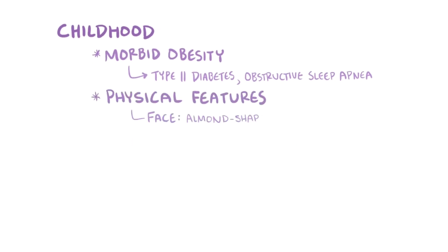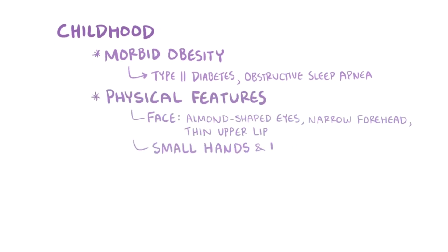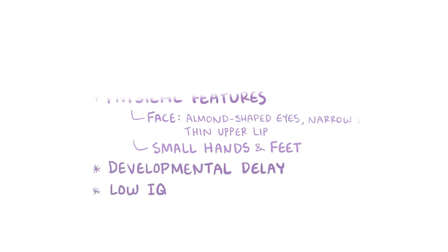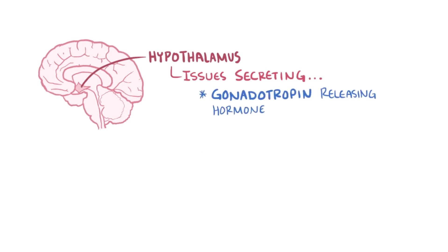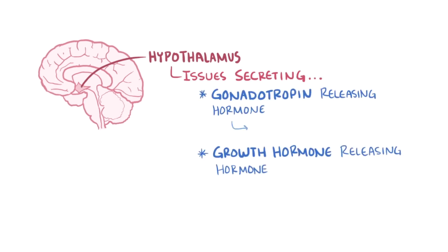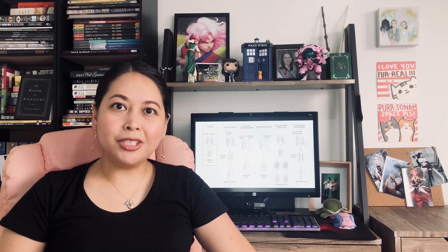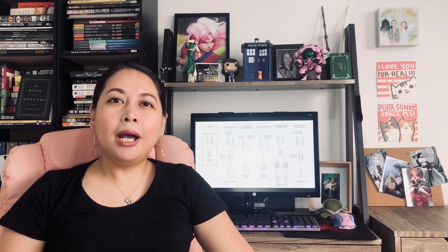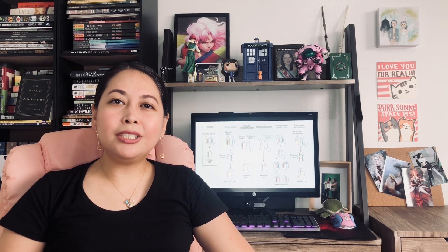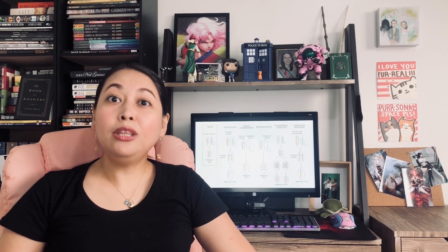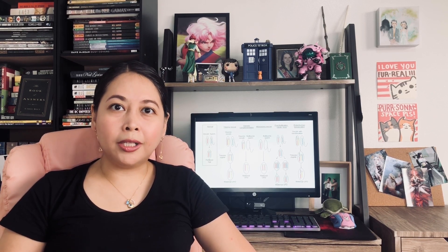Additional features of Prader-Willi syndrome include distinctive facial features such as a narrow forehead, almond-shaped eyes, and a triangular mouth. Both affected males and females have underdeveloped genitals and are unable to have children. About 70% of cases are caused by a deletion of a portion of chromosome 15, while about 25% is caused by the inheritance of two copies of the maternal chromosome 15 and no copies from the father — this is called maternal uniparental disomy.